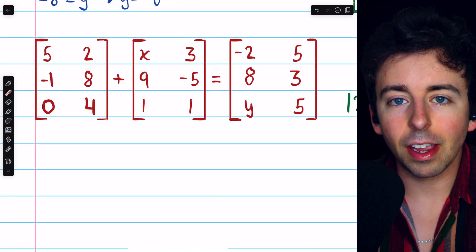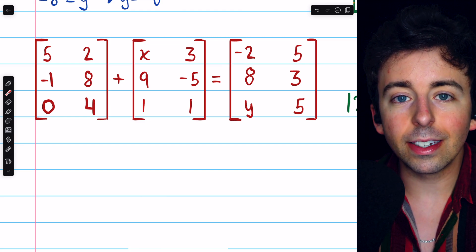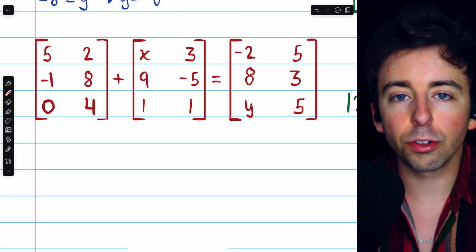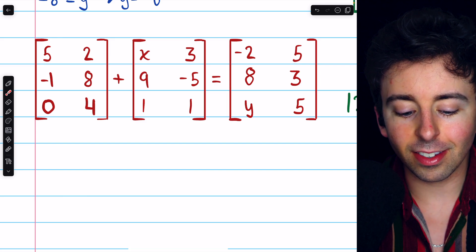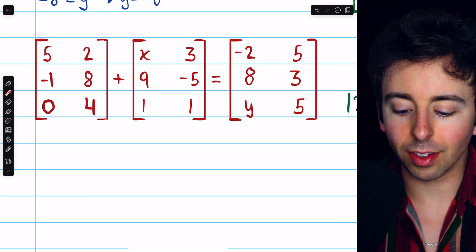In this final example, just like the previous one, there's something we need to do before we can set corresponding entries equal to each other. Because this equation doesn't say that this matrix equals this one.